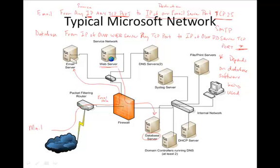The big thing is: where in the order of things do you put these rules? For example, if you've been getting a lot of spam from a particular mail server at a particular IP address, you could write a rule to block that IP address — but you'd want to put it before the general email allow rule. Otherwise the allow rule is triggered first and you're still going to get your spam. So rule order is important. We'll talk more about that later.